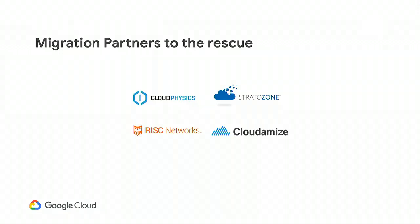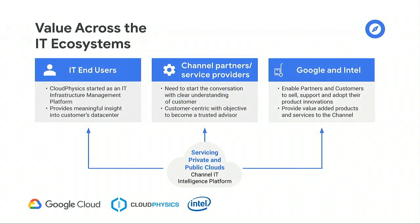So how do we make this happen? We have four migration partners: Cloud Physics, Stratazone — both of whom are here today — and also Risk Networks and Cloudimize. These tools give you the ability to understand deeply what's in your environment from a cost perspective, from a component perspective, and the connectivity between those components. With that, I'd like to introduce Chris Grossmeier from Cloud Physics.